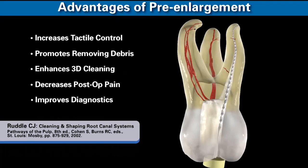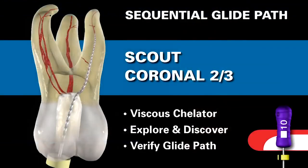What is the secret to pre-enlargement? In a sequential glide path, we fill the chamber with a viscous chelator. There are three advantages: a viscous chelator gives us a superior lubricant, it emulsifies tissue by preventing the re-adherence of collagenous vital tissue, and the debris being generated is more effectively held in suspension. Examples of viscous chelators are ProLub, Glide, or RC Prep.